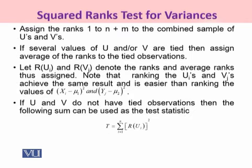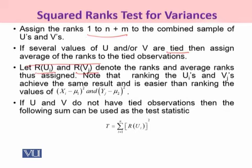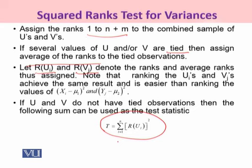The procedure is to assign ranks 1 to n+m — combining both samples and then assigning ranks to the U's and V's. If several values of U and V are tied with each other, we assign the average of the ranks to the tied observations. We let R(Uᵢ) and R(Vⱼ) denote the ranks and average ranks assigned. We calculate the ranked U's and V's, sum of the ranks, and then square that sum.